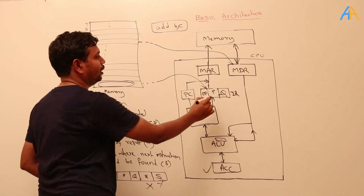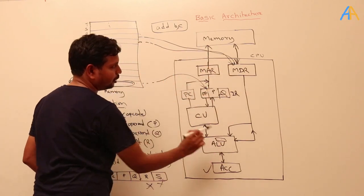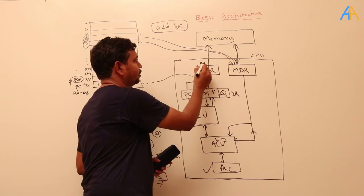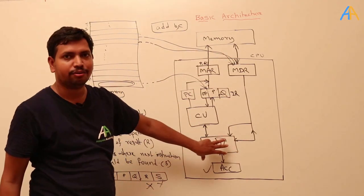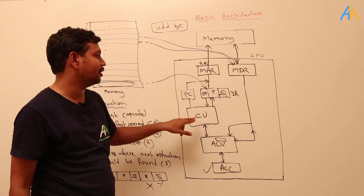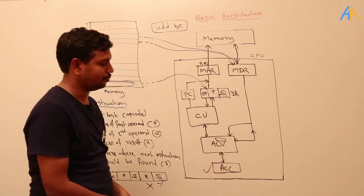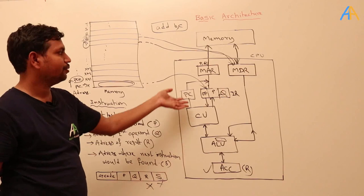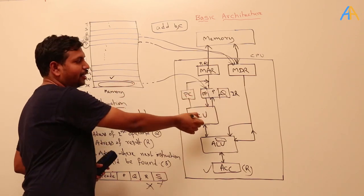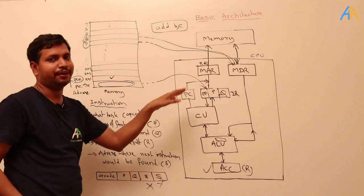Next, address Q is placed in the memory address register, and data is fetched from Q and stored in the accumulator. This way data from P and Q locations is retrieved sequentially. The control unit then interprets the opcode — for example, addition — and generates control signals so the ALU performs the addition. The result is stored in the accumulator, and the next instruction is fetched and the cycle repeats.